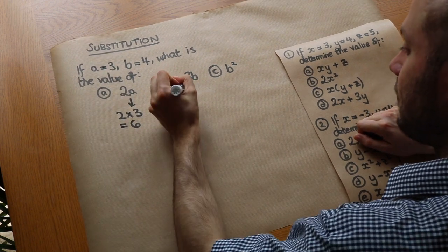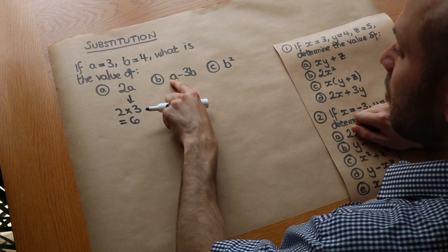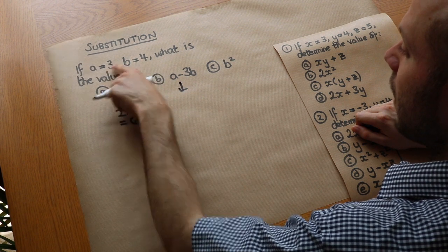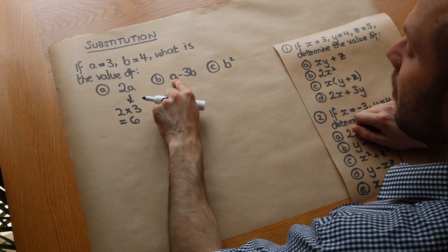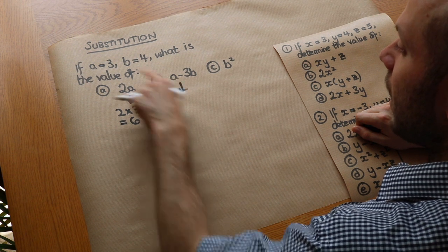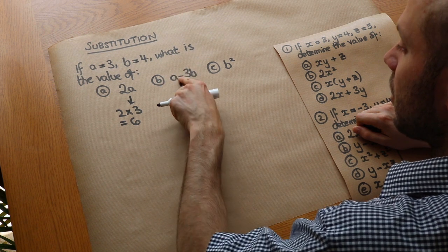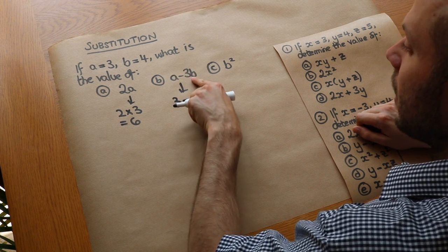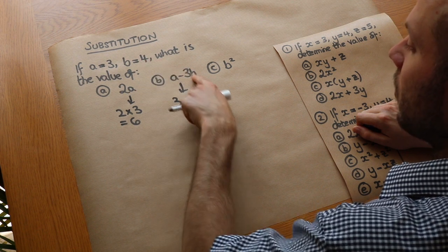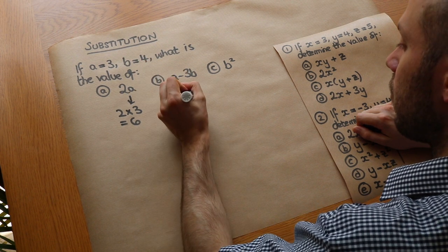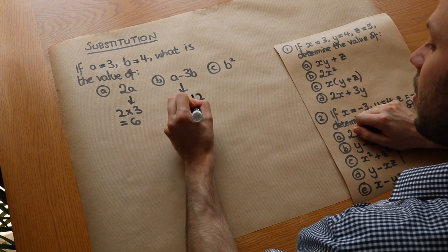What about a minus 3b? Let's substitute in these values. To substitute means to replace the variable with its respective value. So a is worth 3, minus 3b. Now what's 3b? It's 3 lots of 4, because b is 4. 3 lots of 4 is 12, and that means I have 3 minus 12, which is minus 9.